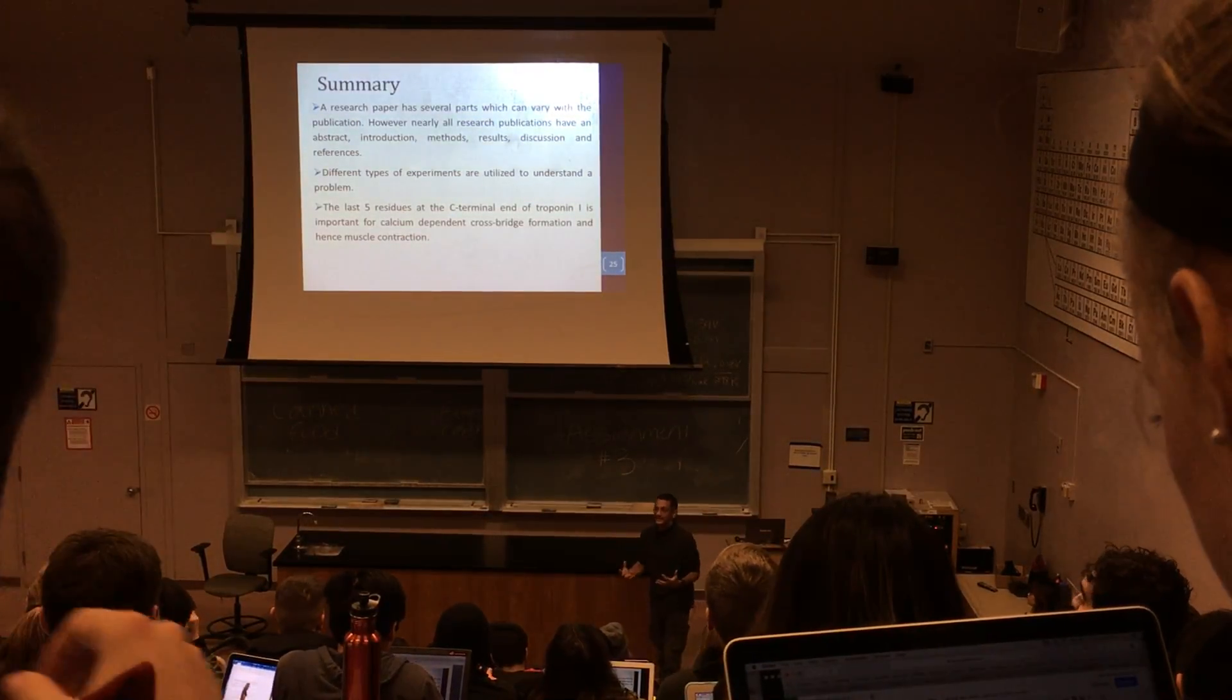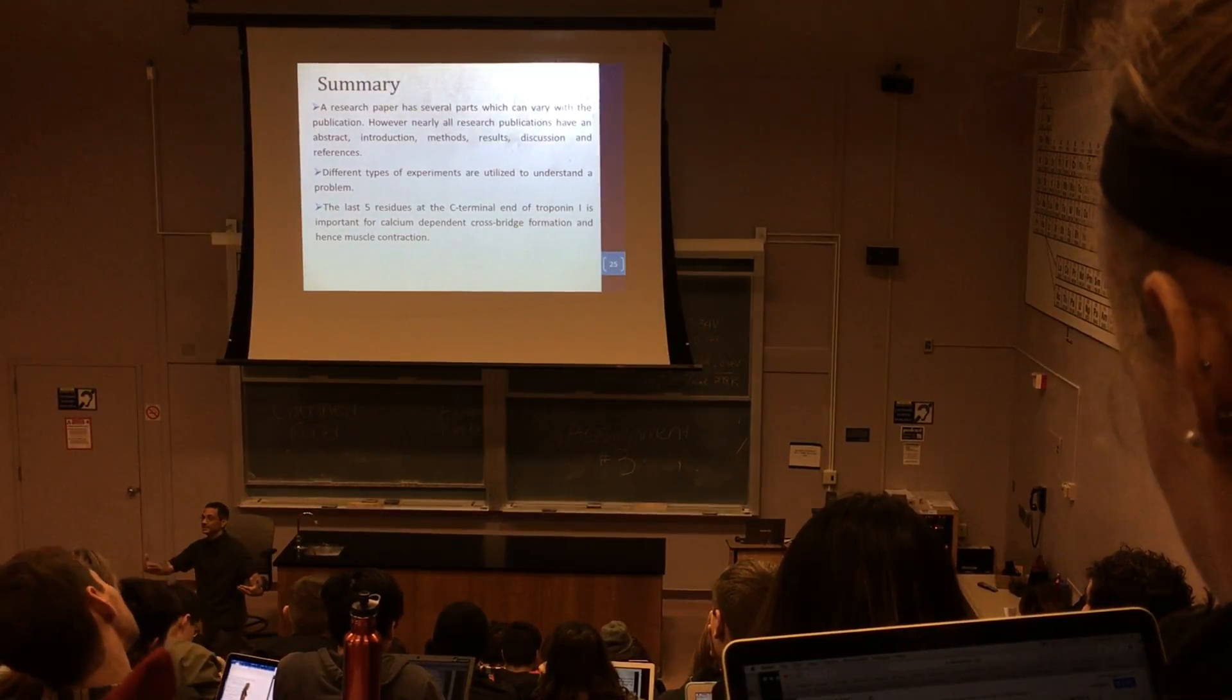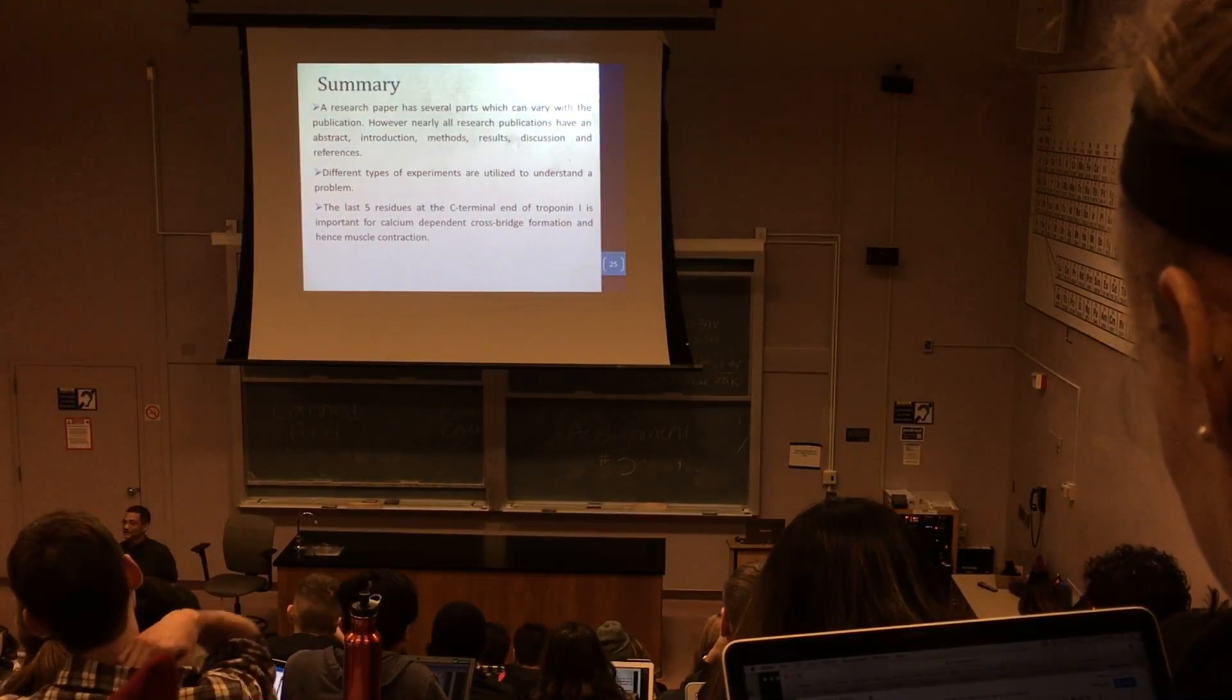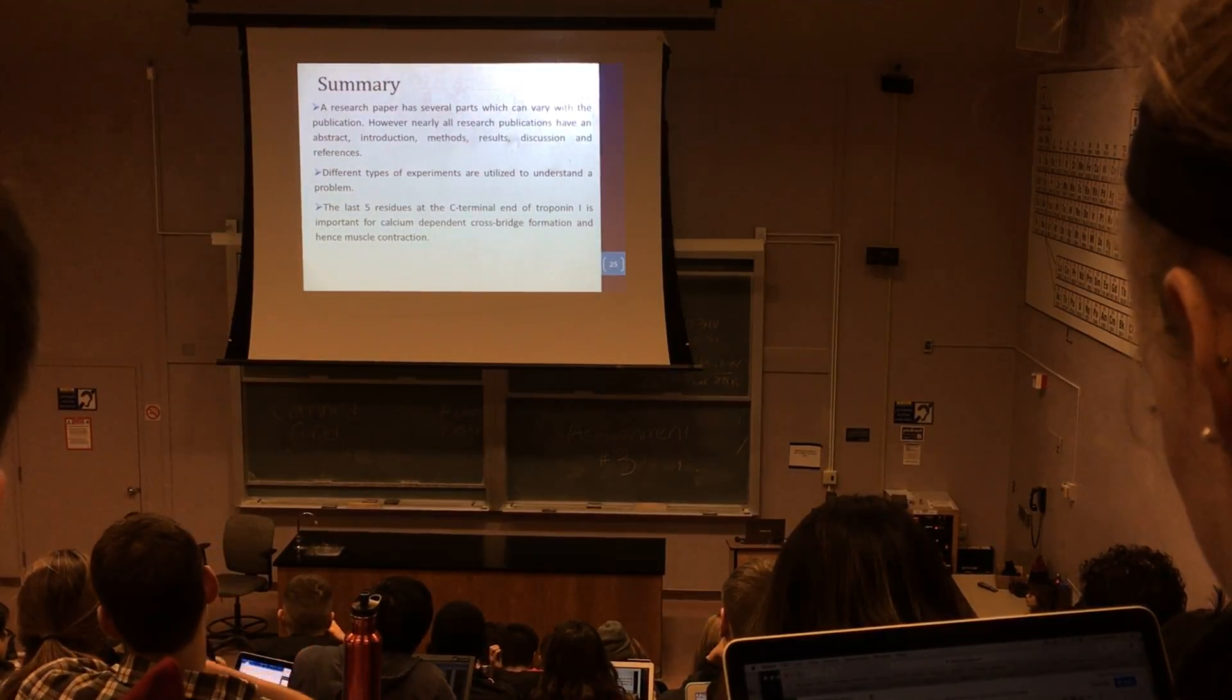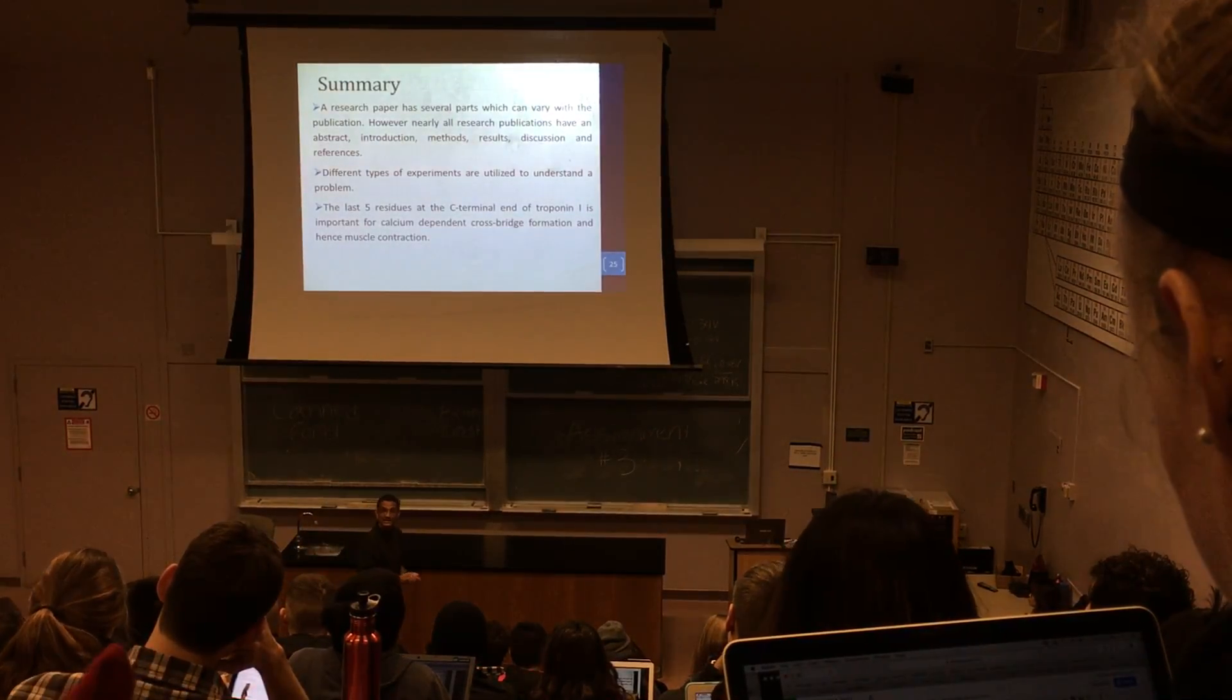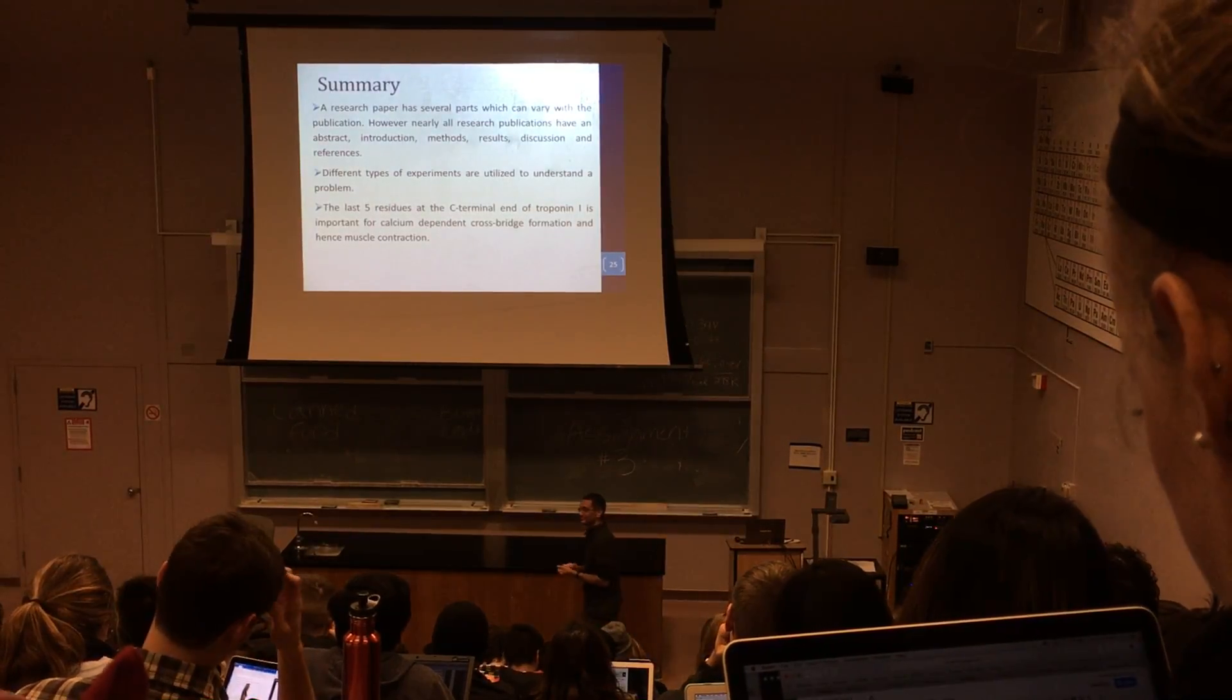So, alright. So, the summary of this is that a research paper has several parts, as you saw. And these parts are very important because we need to be able to reproduce data, we need to be able to understand data, and the data must be moving the field forward. So, when a paper is presented and it does nothing towards moving the field forward, it's not a good paper. And you generally see those, there's something called an impact factor, and sometimes a lot of these are published in impact factors less than one. They're not good quality. Right? So, different types of experiments we can utilize to allow this to happen, but the last five residues of troponin I at the C-terminal is important for its function. Alright? Now we switch a little to get you to think a little different, so let's get a few jokes in. Alright?